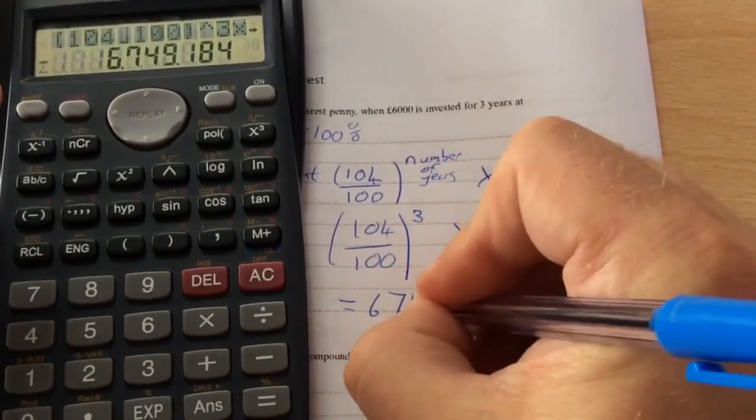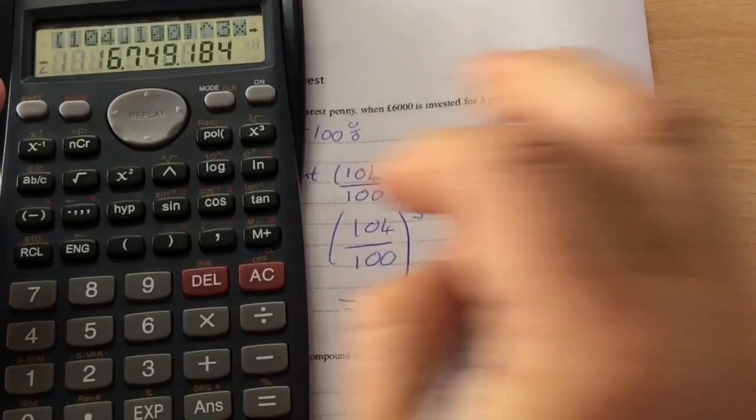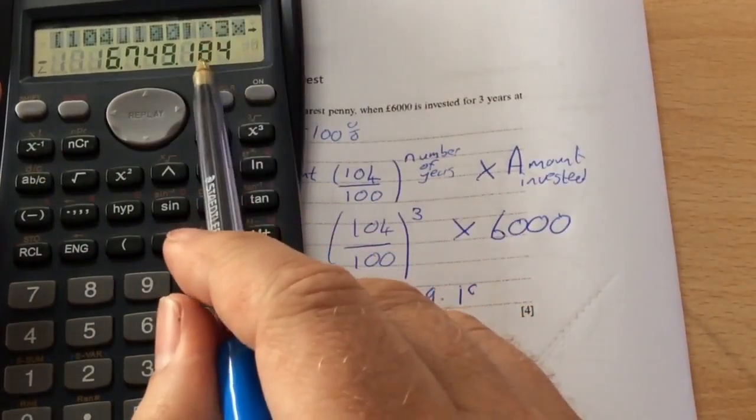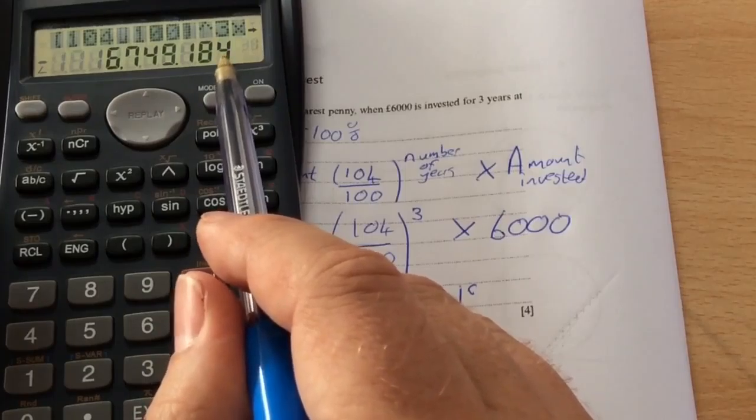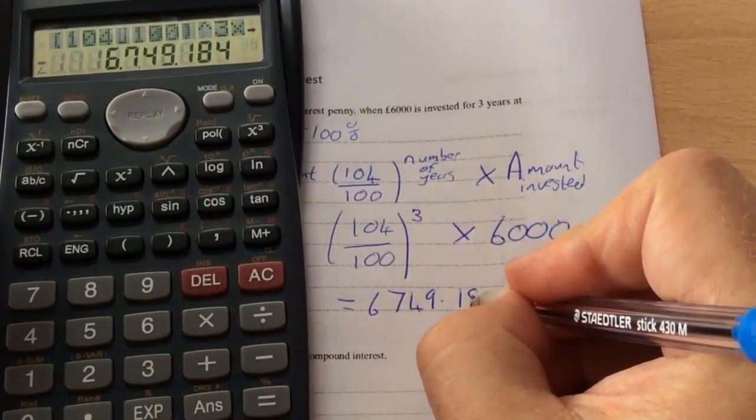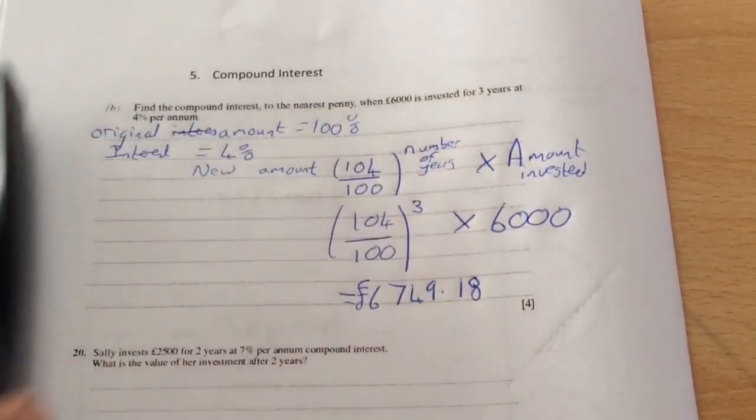So the answer becomes £6,749 point... it's either going to be to the nearest penny, either point 18 or point 19 pence. But because that's four or less, we round down, so it's £6,749.18.